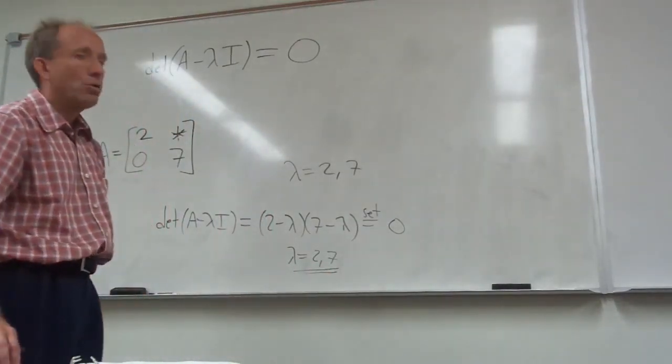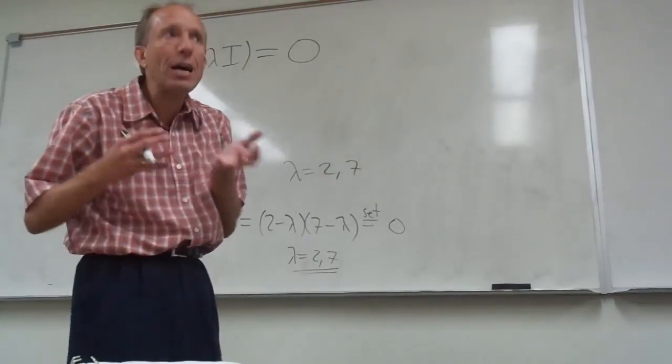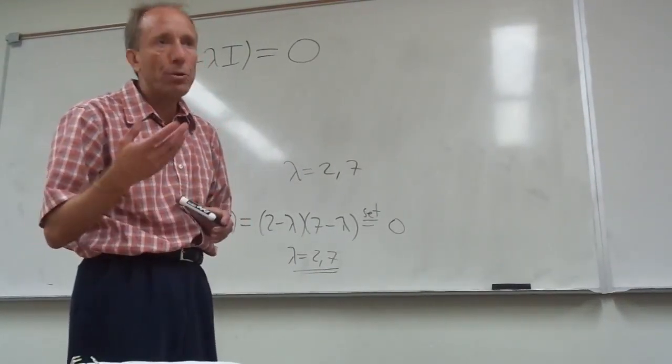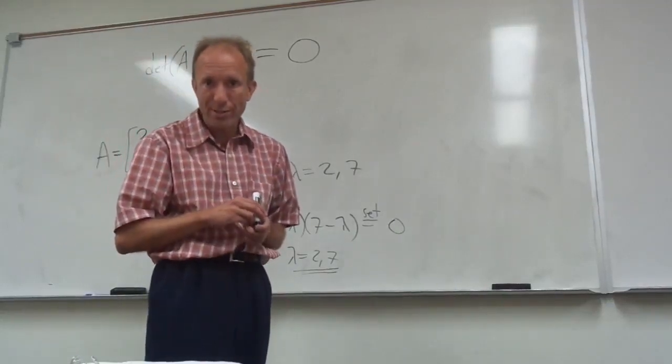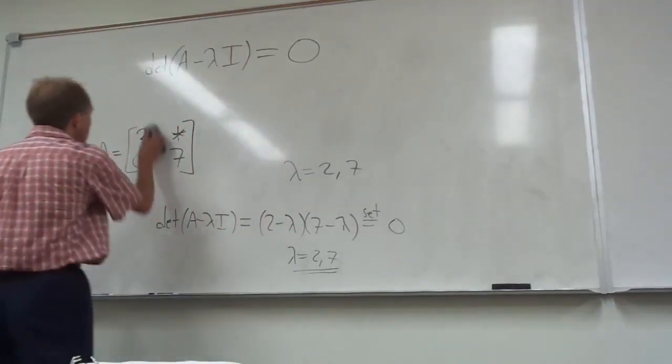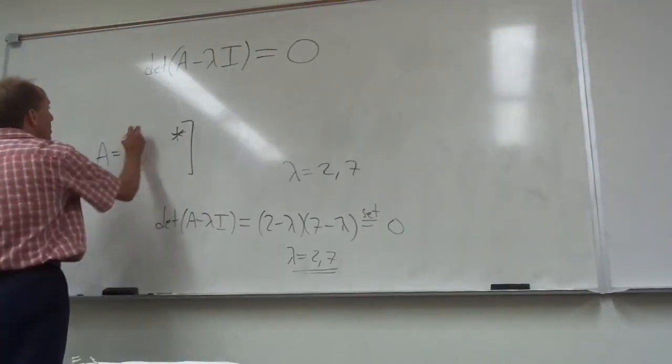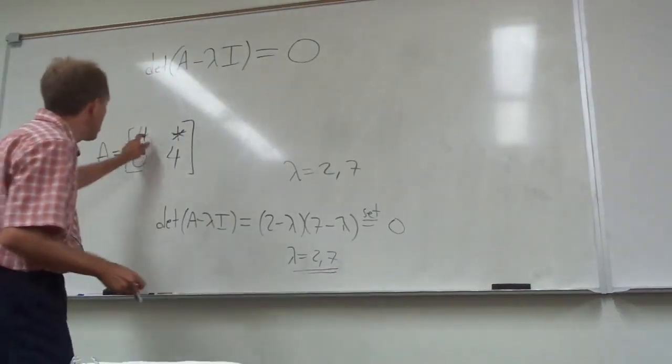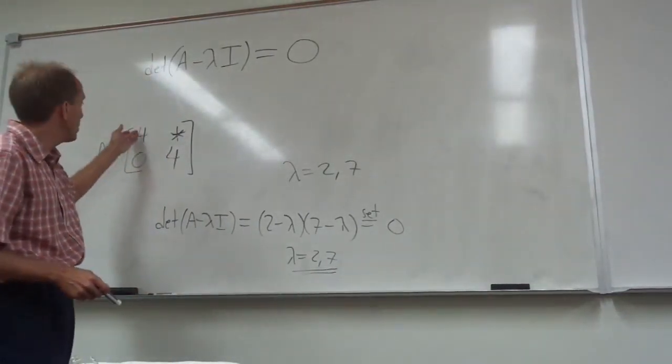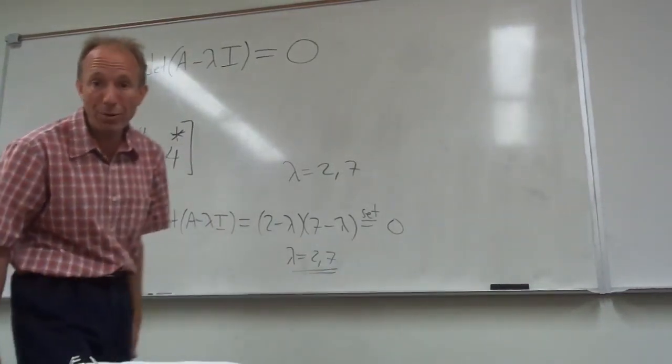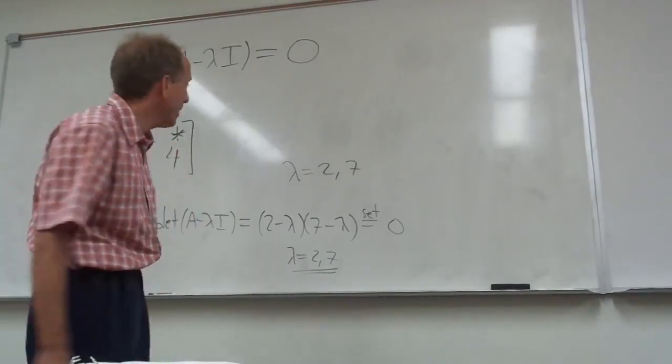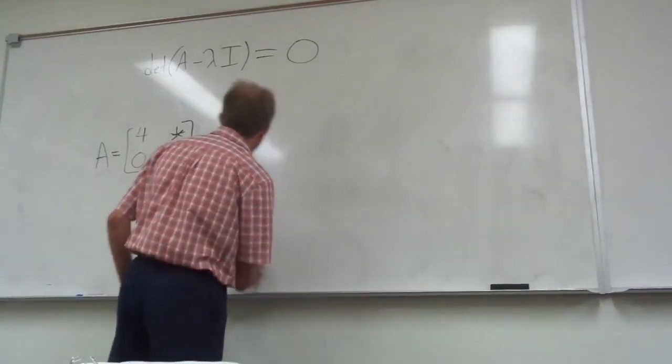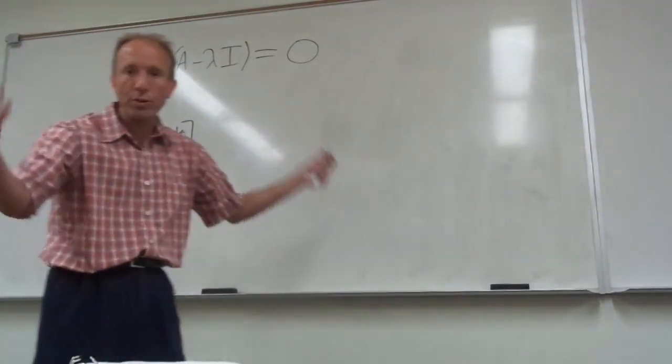Because when you subtract lambda from that, the determinant of A minus lambda I now is going to be two minus lambda times seven minus lambda and then minus zero. And when you set that equal to zero, you're going to get lambda equals two and seven. So you can make matrices that have the eigenvalues that you want them to have. For example, if you want to make a defective matrix, a two by two defective matrix, a good way to do that is to put the same number. You need to have a repeated lambda. You have to have the same lambda showing up twice. So something like four and four, that would be a great way to do it.